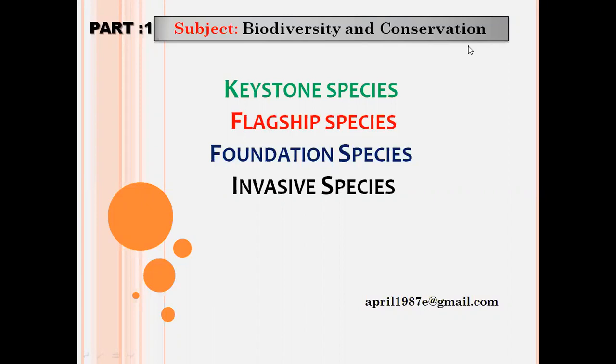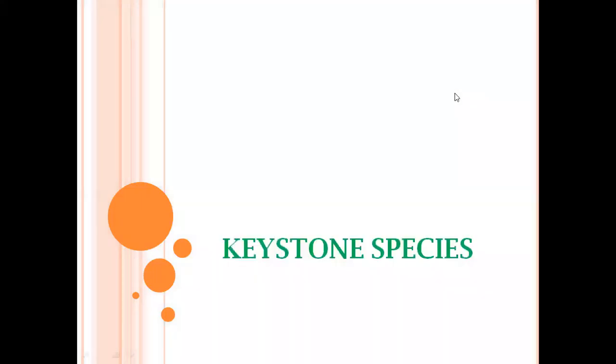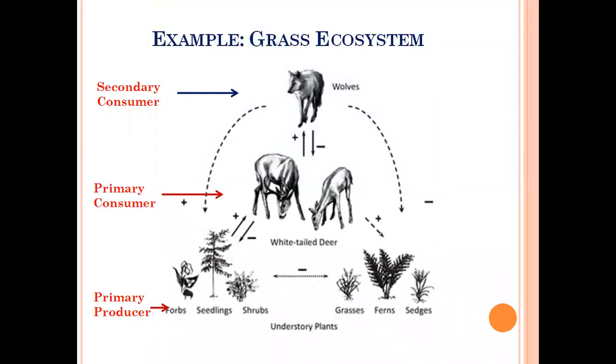To begin with, let's first see what is a keystone species. To understand what is a keystone species, let's take an example of a grassland ecosystem. In a grassland ecosystem, the autotrophs or the primary producers occupy the base of the trophic level, followed by the primary consumers or herbivores which are the deer, and then followed by secondary consumers or carnivores which are the gray wolves.